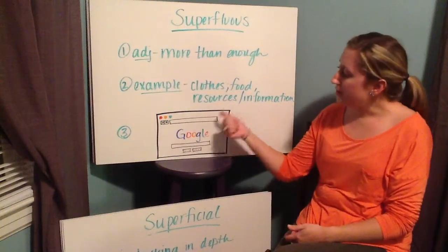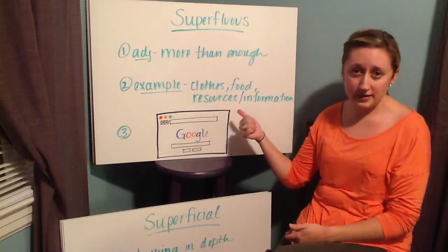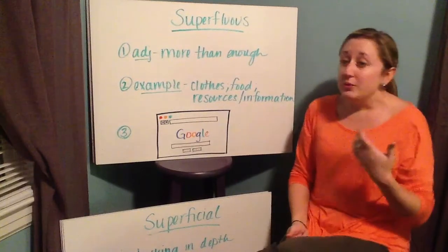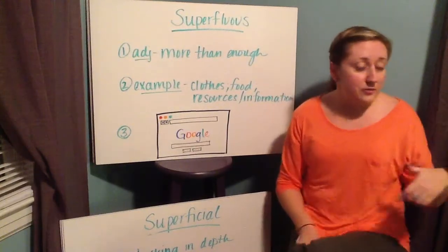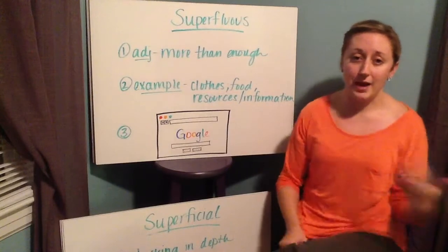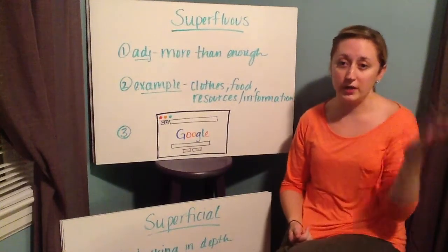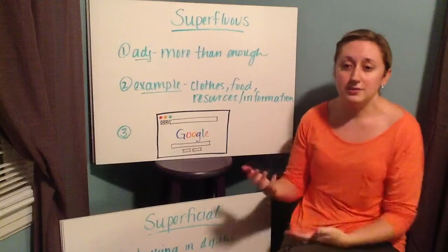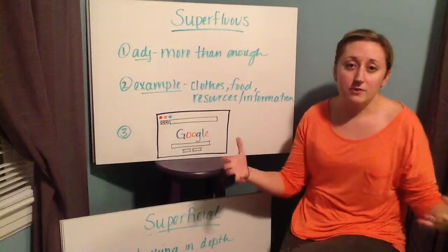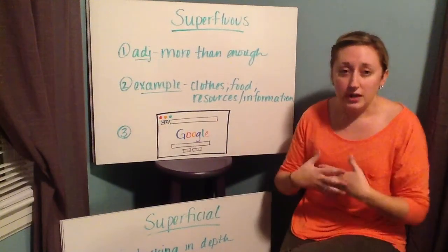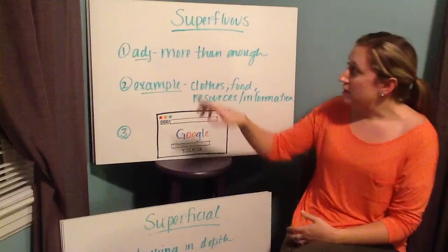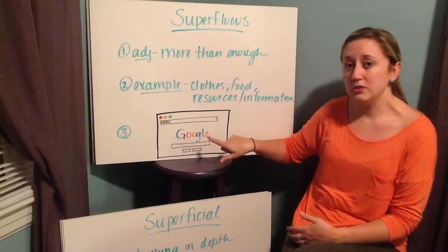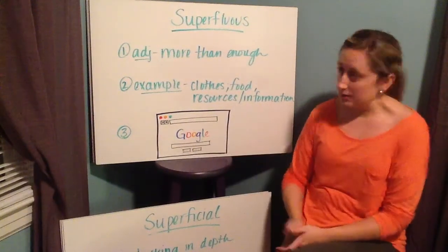The picture I drew goes with our third example: resources and information. In the 21st century, most of us have a cell phone, computers, iPads, and we watch TV and listen to radio. We have a wealth of information to get answers for anything we would want. There's a superfluous amount of information and resources for us to use to find the answers to our questions.